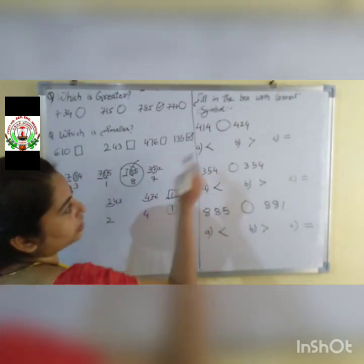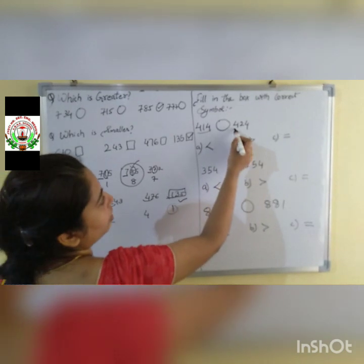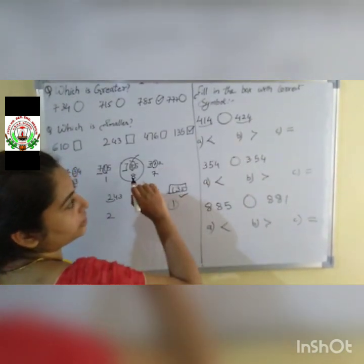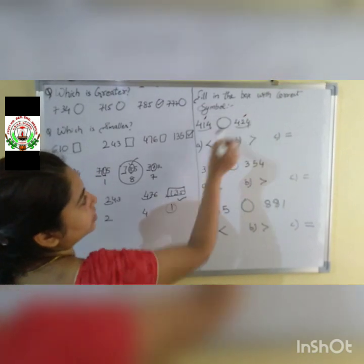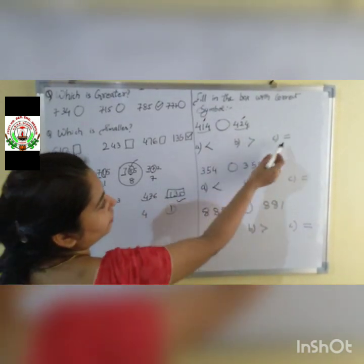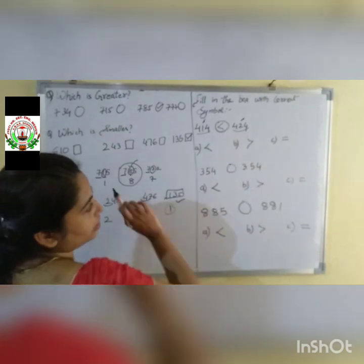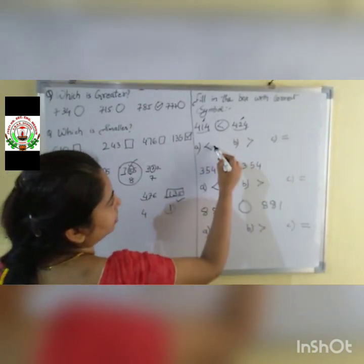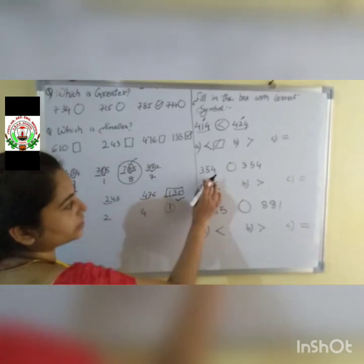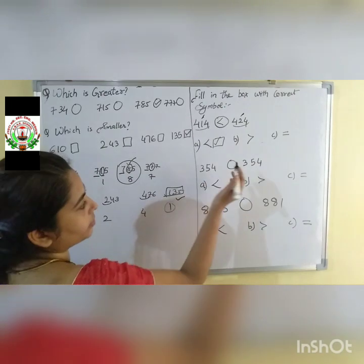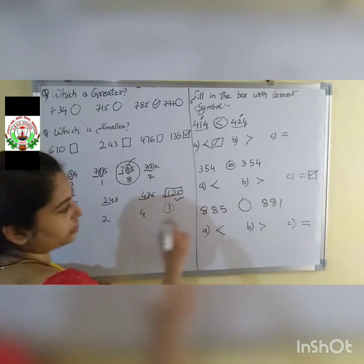Fill in the box with the correct symbol: greater than, less than, or equal to. For 414 and 424: the hundreds and tens digits are both 4 — equal so far. Then compare 1 and 2 in the units place. 2 is greater, so 414 is less than 424 — use the less than symbol. Next, 354 and 354: both numbers are the same, so the answer is the equal to sign, option C — tick mark.